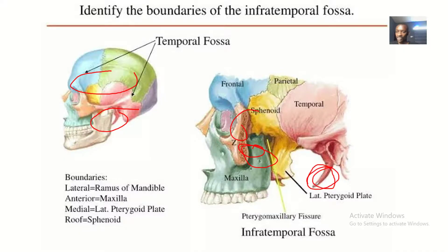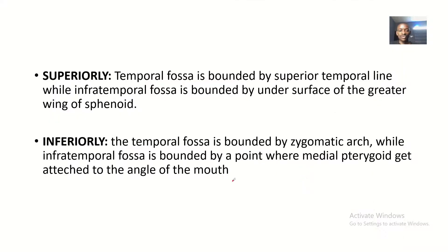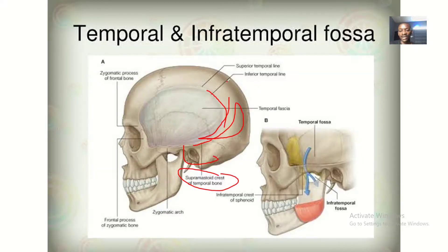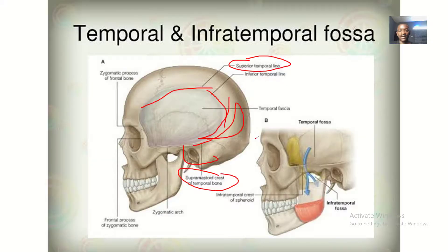Superiorly, the temporal fossa is bounded by the superior temporal line, while the infratemporal fossa is bounded by the infratemporal surface of the greater wing of the sphenoid.